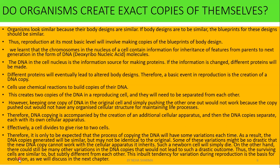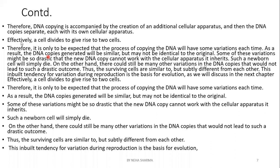The DNA copies generated will be similar but not identical - they will share some characters but there will be some variation. Some variations are drastic - the new DNA cannot work with the cellular apparatus it inherited, and such a newborn cell will simply die. The surviving cells are similar but different from each other. This tendency for variation during reproduction is the basis of evolution, which we will discuss in the next chapter.